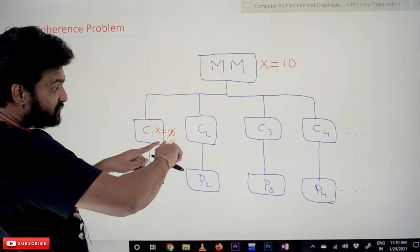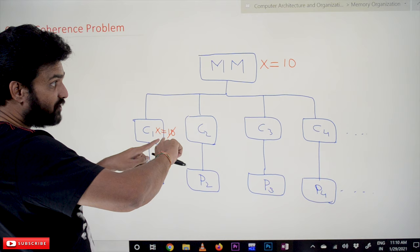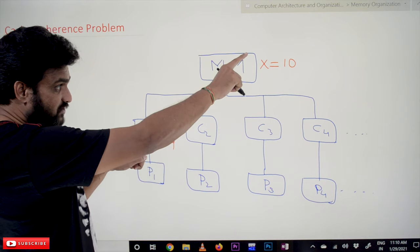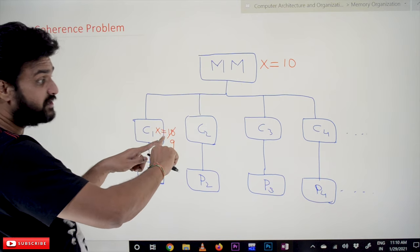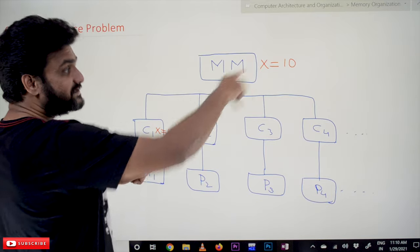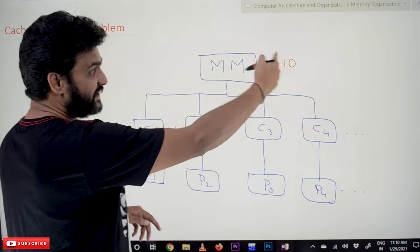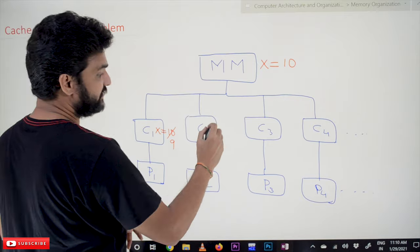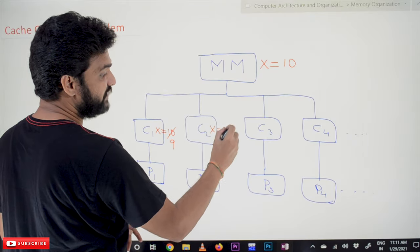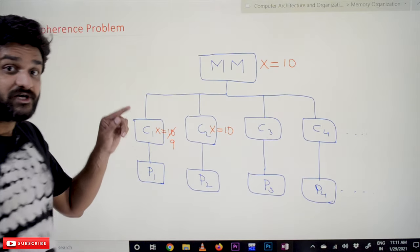We haven't updated the value of X from 10 to 9. So in the process of updating, between the process of updating the value of X on the main memory with the value of X in the cache memory, if C2 is trying to access the value of X, it has accessed the value of X.